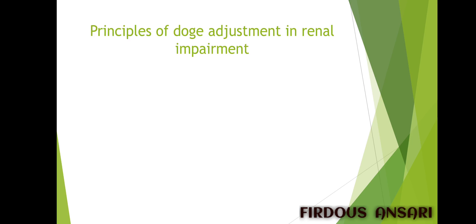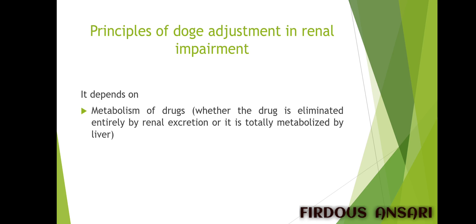The principles of dose adjustment in renal impairment depend on the metabolism of drugs — whether the drug is eliminated entirely by renal excretion, totally metabolized by the liver, or how toxic the drug itself is. Most drugs are eliminated via the renal route. If the drug is already water-soluble, then 100% of its elimination will be via the renal route, and when the kidneys are not working properly the drugs will accumulate in the body, leading to toxicity. If the drug is already toxic, the scenario becomes even worse.